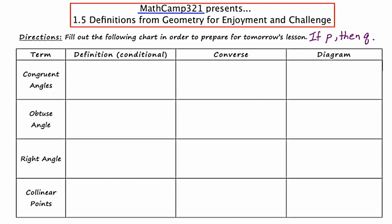I'm going to underline the P part in green and the Q part in orange. The P part is known as the hypothesis, and the Q part is known as the conclusion. You should write that down, even though there's not a box for it on your page — you should definitely write that down.